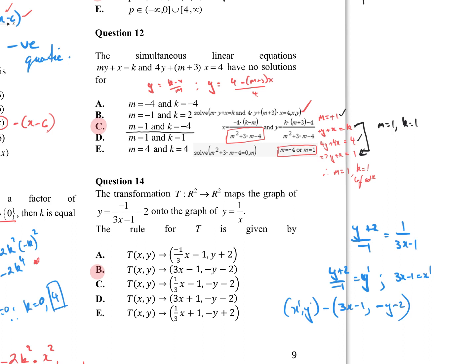So C is m equal to 1 and k not equal to 1. k doesn't have to be negative 4 — it can be anything, but that combination gives a parallel line. So C is the response there. Once I get one correct, if m equal to 1 didn't give a parallel line I'd have to check m equal to negative 4.